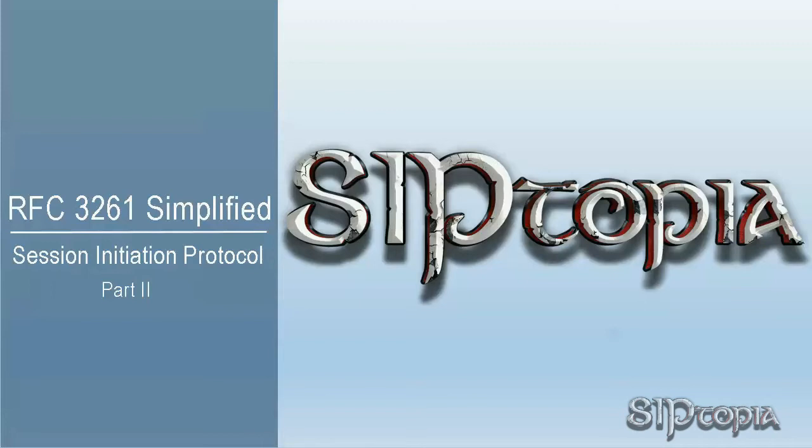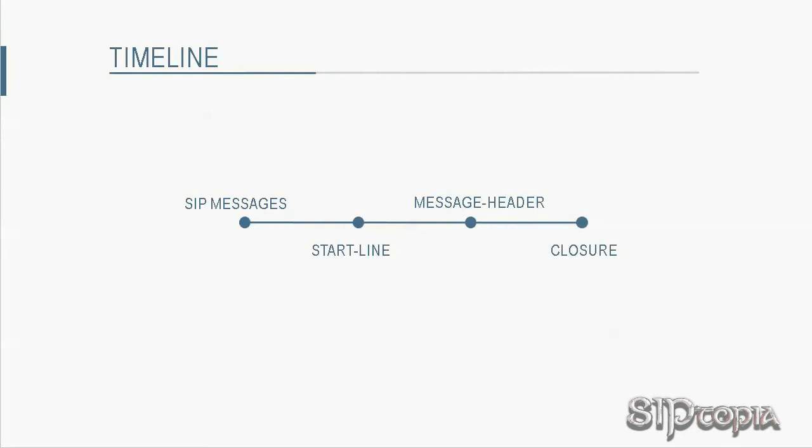In this part, we will first look at SIP messages, and then we will look at the two mandatory sections that create SIP messages: the start line and message header. The other section, message body, is optional, and we won't be discussing it here in this part.